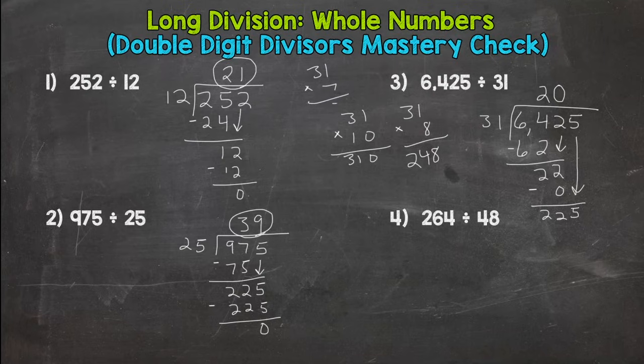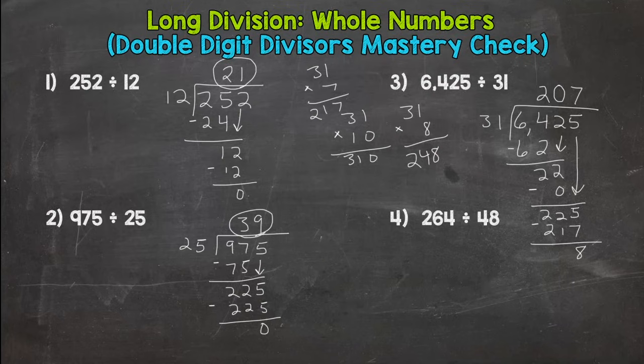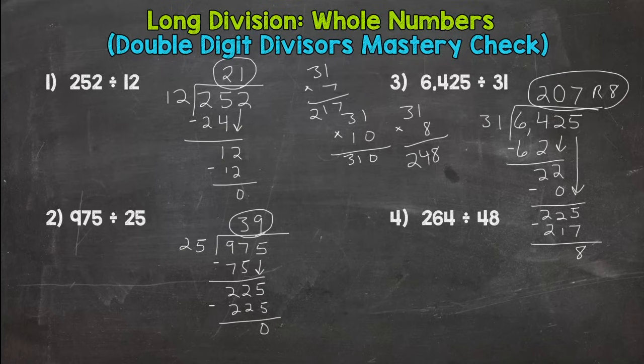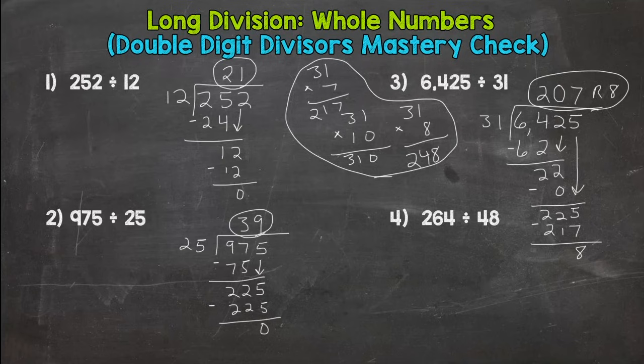31 times 7, we get 217, which is as close as we're going to get. So it's going to be seven here, and 217, we get a remainder of eight. So 207 remainder 8. You can see I took some work off to the side here, used estimation and checking to get that answer, and that is fine.